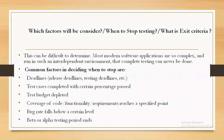Which factors will be considered when deciding when to stop testing, or what is the exit criteria? This is one of the difficult things to determine. A lot of factors need to be considered, and when the majority are satisfied, we can stop testing. Modern software applications are so complex and run in such an interdependent environment that complete testing can never be done — exhaustive testing is not possible.